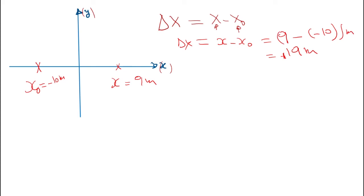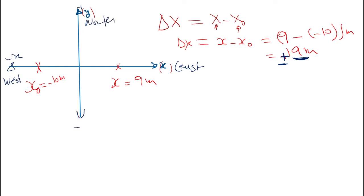A result of positive 19 meters means we are going in the east direction. So the displacement is a vector with magnitude 19 meters and direction east. Remember: plus x is east, minus x is west, plus y is north, and negative y is south. This is what we mean by displacement having magnitude and direction.